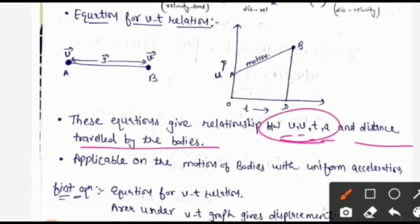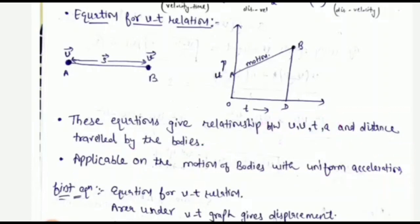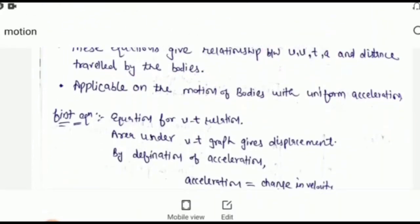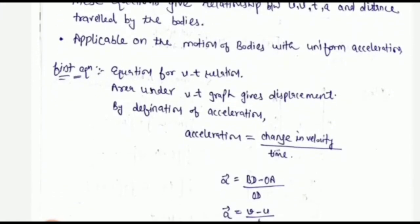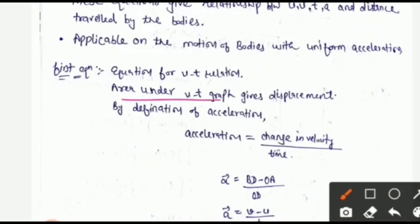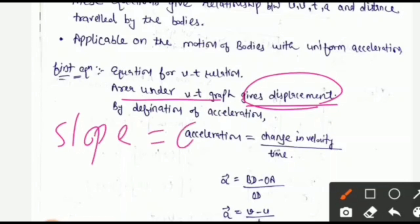In all these relationships, we get three equations. These three equations are applicable to the motion of bodies with uniform acceleration. So the first equation is derived from the VT graph. The area under the VT graph gives displacement — this is what was done in the last lecture. The slope of the VT graph gives acceleration.